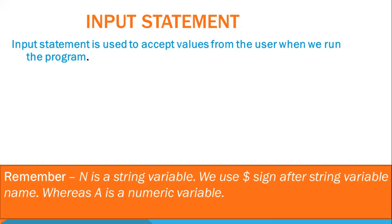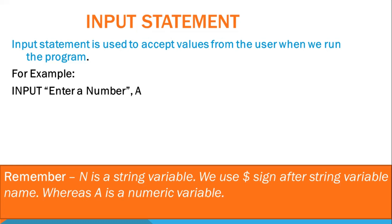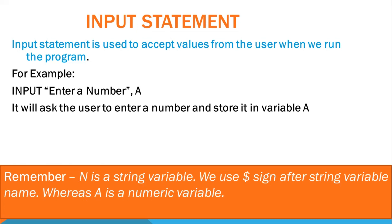Basically when we are running the program, it will ask you to enter the values. For example, we write: input "enter a number", a. So it will ask the user to enter a number and store it in variable a. When you run this line, it will give you a prompt. This 'enter a number' is a prompt - a message which will be displayed in the text output area, and whatever number you enter will be stored in the variable you specify.